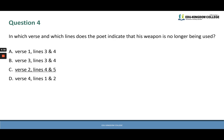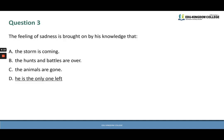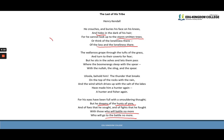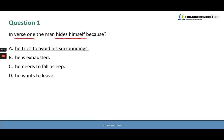We actually have four questions looking at the poem. Question four asks: in which verse and which lines does the poet indicate that his weapon is no longer being used? The keywords are 'which verse' and 'which line,' and we check each option. Option A is verse one, lines three and four: 'for he cannot look up to the storm-smitten trees, or think of the loneliness there' — no mention of weapons, so A is out.